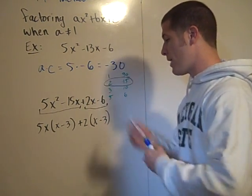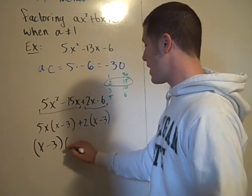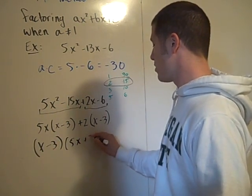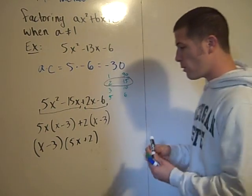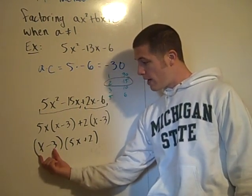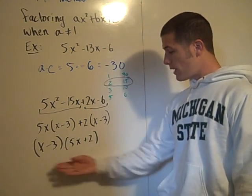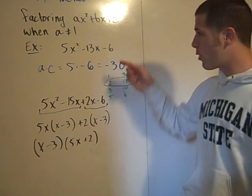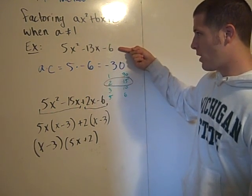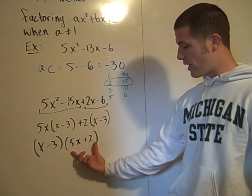So if you factor out the x - 3, you're left with (x - 3) times (5x + 2). And you see if we were to use the distributive property to put, to sort of multiply this x - 3 back in, we'd have (x - 3) times 5x and (x - 3) times 2. And so this here is the factored form of this expression 5x² - 13x - 6. It is (x - 3) times (5x + 2).